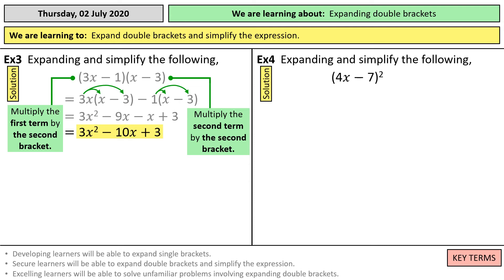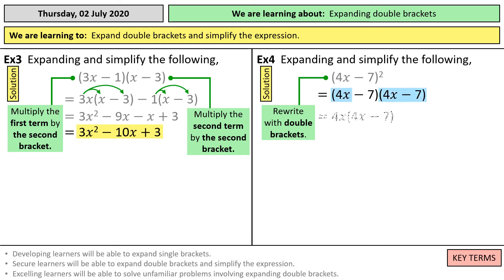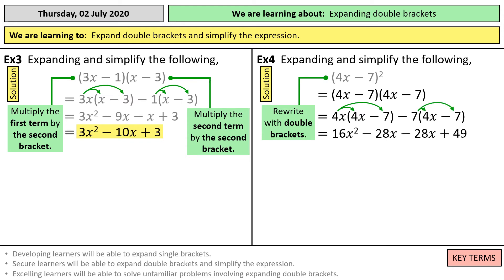Here we've got a perfect square — a repeated bracket. So we can write this out as 4x minus 7 times 4x minus 7. Anything times by itself is squared. So we're going to do 4x times 4x minus 7, and then minus 7 times 4x minus 7, which gives me 16x squared minus 28x minus 28x plus 49. So I'm going to have 16x squared minus 56x plus 49.